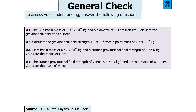The next question says: the Sun has a mass of 1.99 × 10³⁰ kg and a diameter of 1.39 million kilometres — calculate the gravitational field strength at its surface. Then calculate g at 1.2 × 10⁸ m from a point mass of 2.6 × 10²³ kg. Then Mars has mass 6.42 × 10²³ kg and surface g of 3.72 N/kg — calculate its radius. Then Venus has surface g of 8.77 N/kg and radius 6.09 megametres — calculate its mass. Pause the video now.